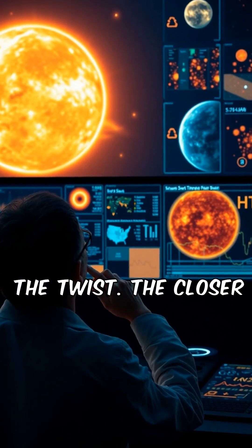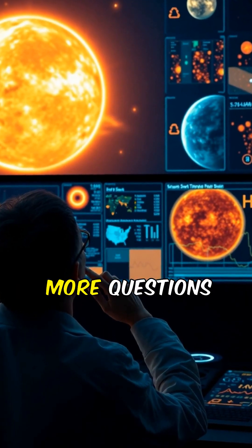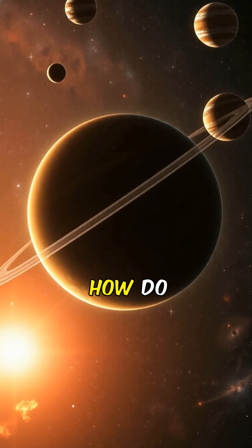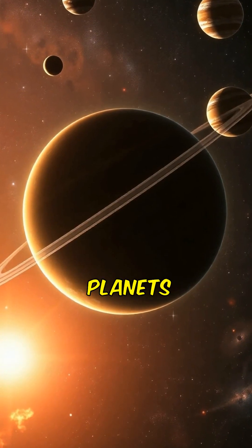But here's the twist. The closer we get to the Sun, the more questions arise. Why is the Sun's atmosphere hotter than its surface? How do these scorching winds affect planets light-years away?